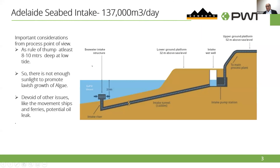This is the Adelaide seabed intake — a 137,000 cubic meters per day plant. The depth of the seawater is about 14 meters, and it's about 1.4 kilometers from shore. As a rule of thumb, in a seawater intake system, the intake should be at least 8 to 10 meters deep at low tide. This is required because at that depth sunlight is minimal, so you avoid lavish growth of algae. You also need to ensure the intake is not near ferry routes where oil spills can occur, because oil is a killer for a membrane.